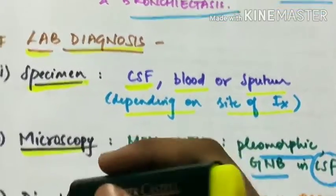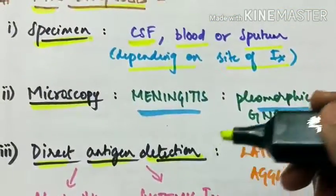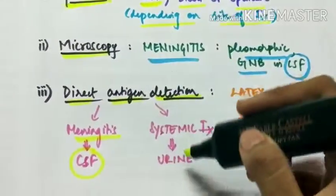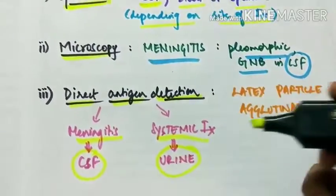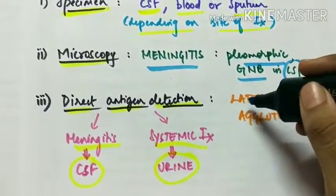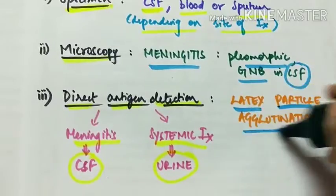Third is direct antigen detection. The CSF is detected in case of meningitis and urine in case of systemic infection. The direct antigen detection is performed by latex particle agglutination test.